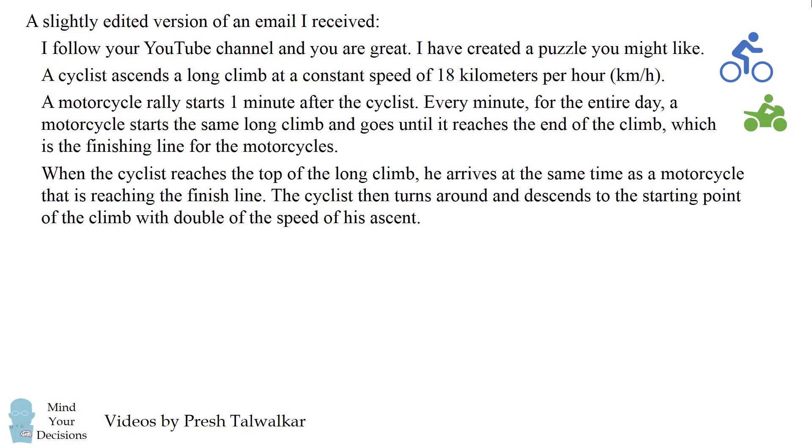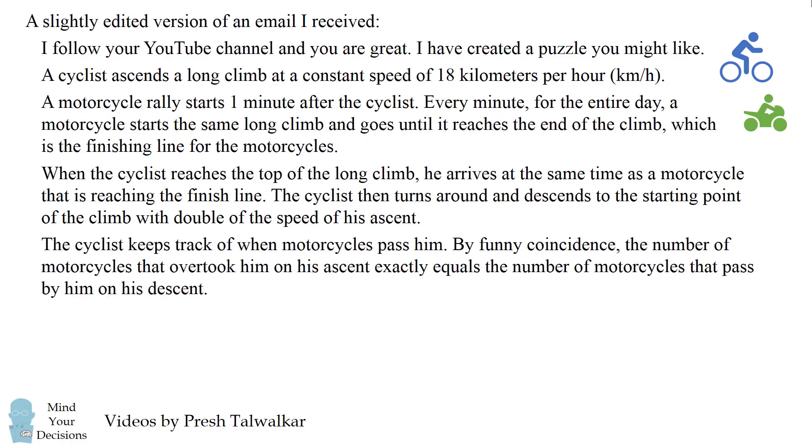When the cyclist reaches the top of the long climb, he arrives at the same time as a motorcycle that is reaching the finishing line. The cyclist then turns around and descends to the starting point of the climb with double the speed of his ascent. The cyclist keeps track of when motorcycles pass him. By funny coincidence, the number of motorcycles that overtook him on his ascent exactly equals the number of motorcycles that passed by him on his descent.